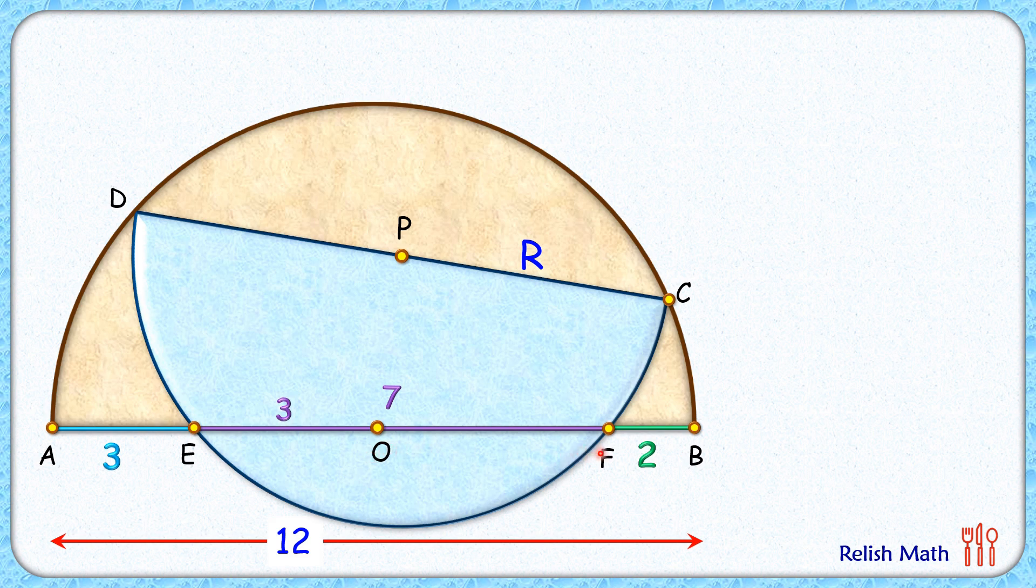How about OF length? OF length will be 7 minus 3 or 4 cm. Let's join CO and extend it to meet here at point G. So we have to find the length GO. How about OC length? OC is the radius of brown circle, so OC length will be 6 cm.